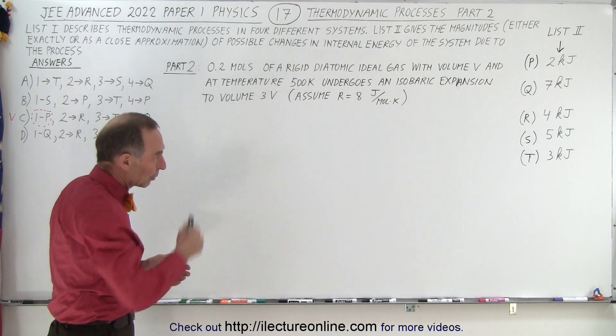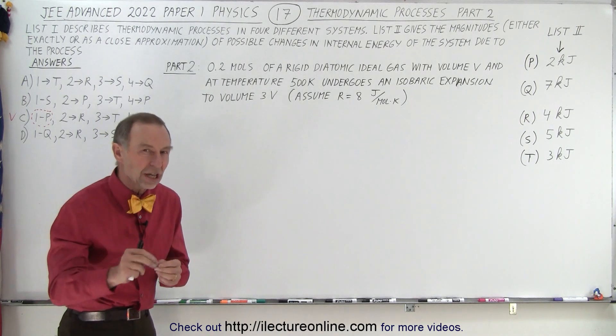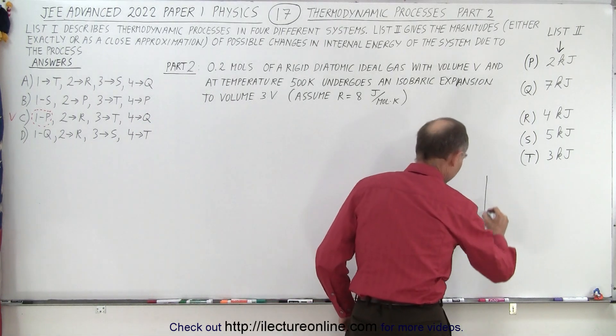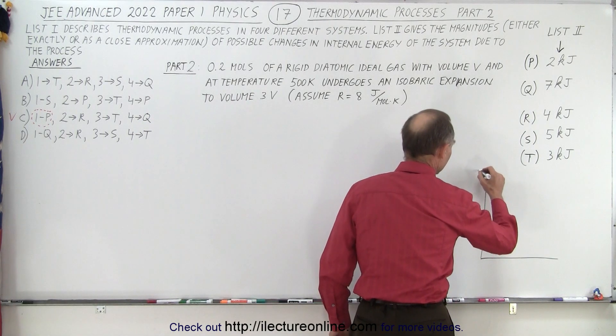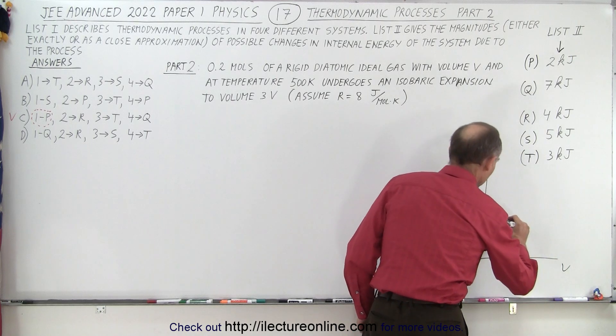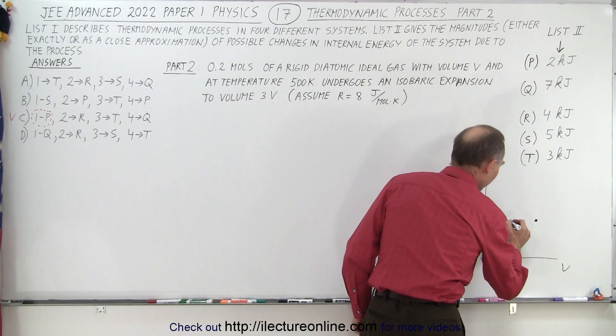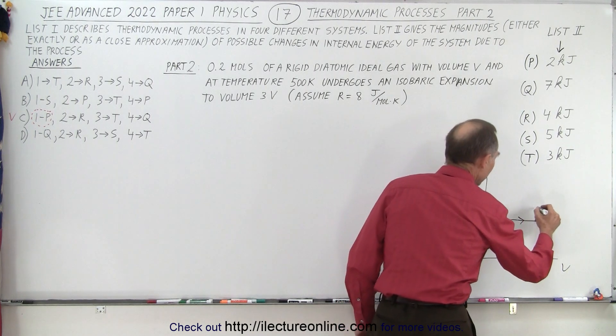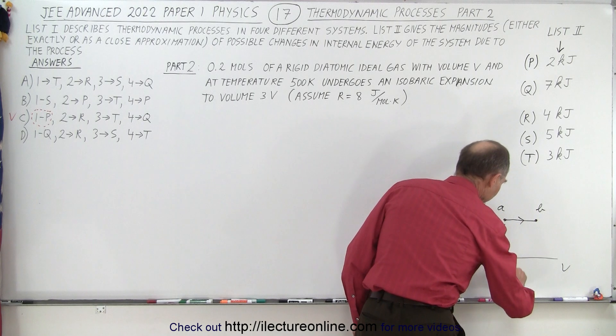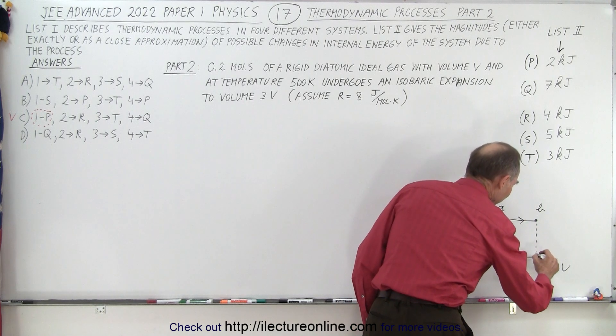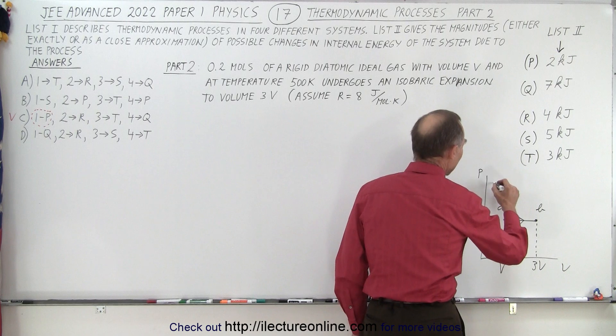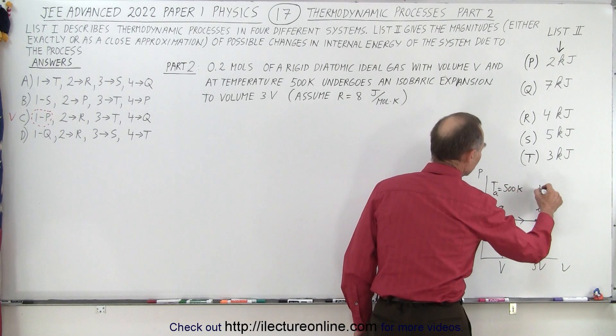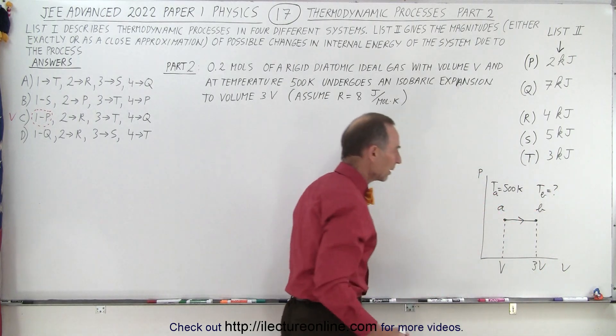So again we need to look for one of those four answers, we're trying to find the change in internal energy. So we have pressure, volume, we have an expansion. If it's isobaric that means the pressure remains the same, we start at A we end at B, at A we have a volume V, at B we have a volume 3V, at A we have temperature at A is equal to 500 Kelvin, but we do not know the temperature at B.